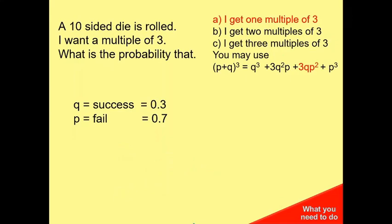My next one, to get one multiple of three, that's my third term, and again I just substitute the values in. So it's 3 times 0.3, because that's successful, and 0.7 squared, because that's unsuccessful, which is 0.441.